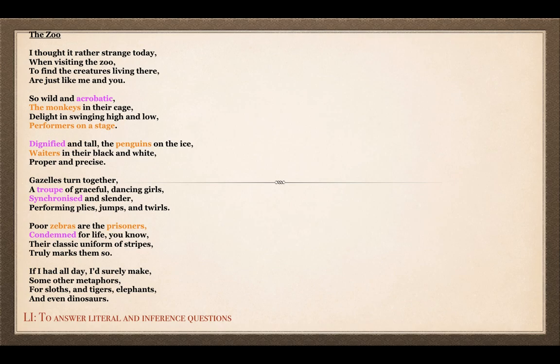I'm going to read 'The Zoo.' I thought it rather strange today when visiting the zoo, to find the creatures living there are just like me and you. So wild and acrobatic, the monkeys in their cage delight in swinging high and low, performers on a stage. Dignified and tall, the penguins on the ice, waiters in their black and white, proper and precise. Gazelles turn together, a troop of graceful dancing girls, synchronized and slender, performing pliés, jumps and twirls. Poor zebras are the prisoners, condemned for life you know, their classic uniform of stripes truly marks them so. If I had all day, I'd surely make some other metaphors for sloths and tigers, elephants and even dinosaurs.